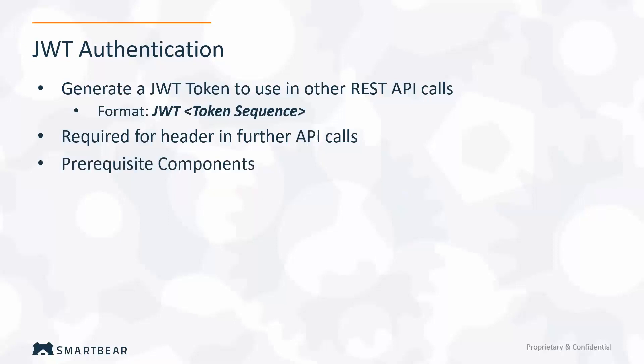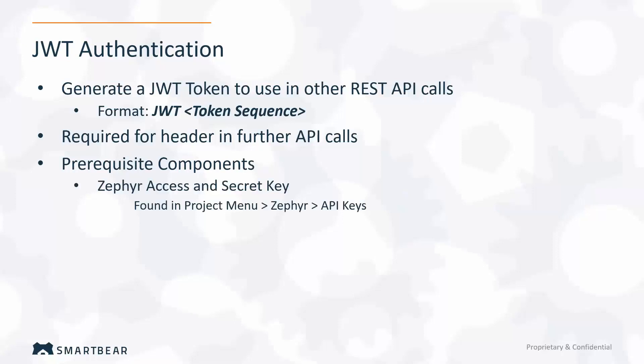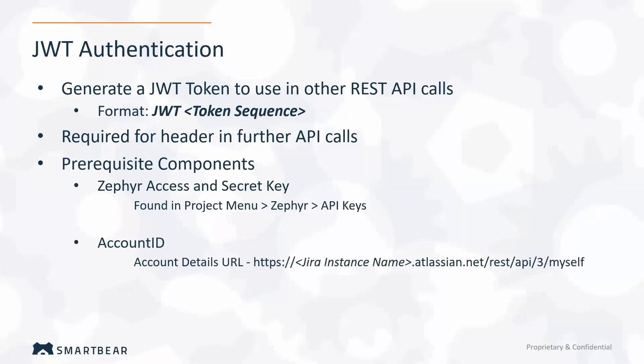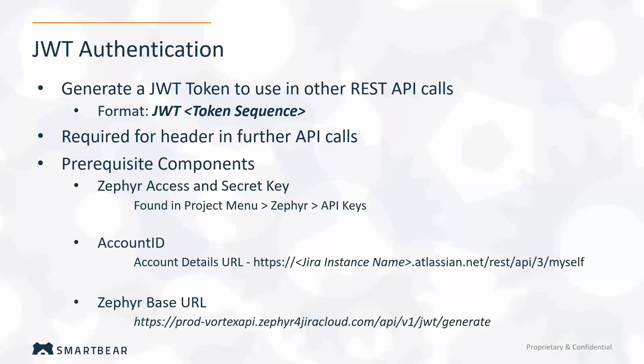The prerequisite components include the Zephyr access key and secret key, which can be found in the project menu under Zephyr under API keys; the account ID, which is found at a specified URL; and the Zephyr base URL, which is the same for everyone on Jira Cloud, so you can use the one listed there.